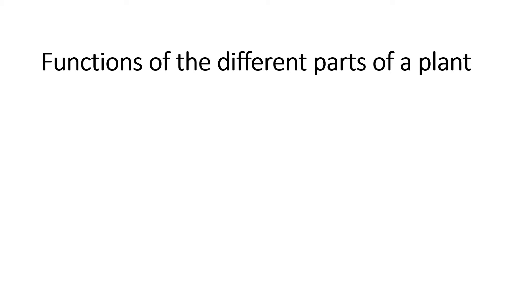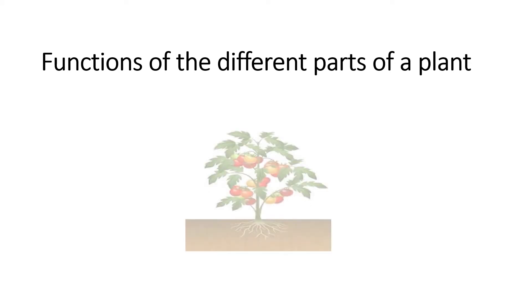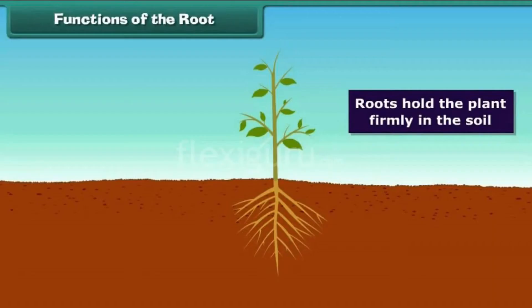Functions of different parts of a plant. Functions of the root: roots hold the plant firmly in the soil. What is the function of the root? Roots hold the plants firmly in the soil. You could see the example.